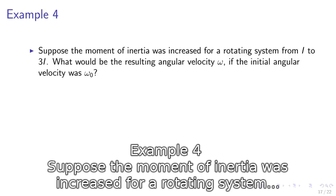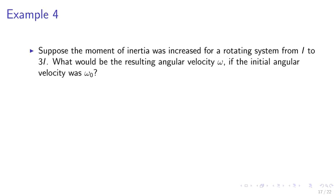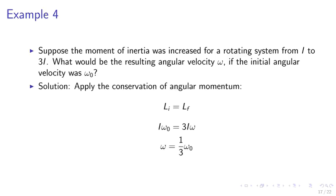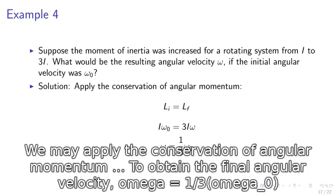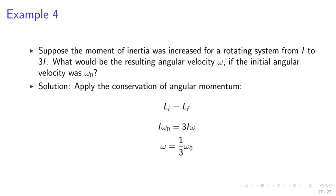Example. Suppose the moment of inertia was increased for a rotating system from I to 3I. What would be the resulting angular velocity omega if the initial angular velocity was omega-naught? We apply conservation of angular momentum: L_initial equals L_final, so I omega-naught equals 3I omega, giving the final angular velocity omega equals one-third omega-naught.